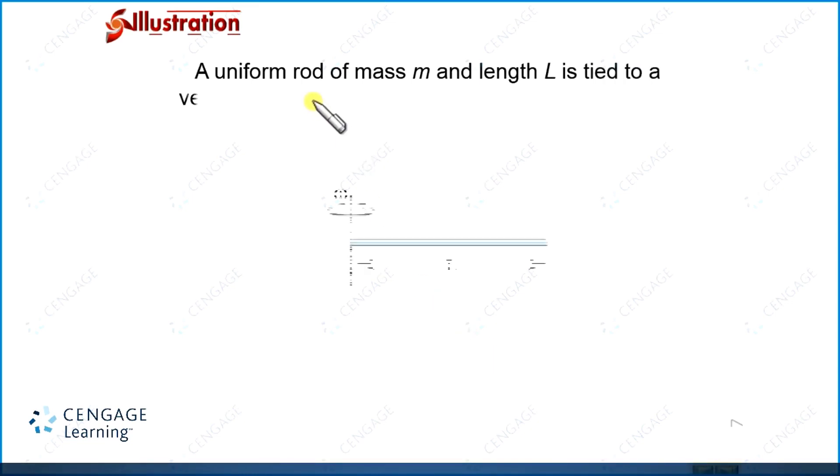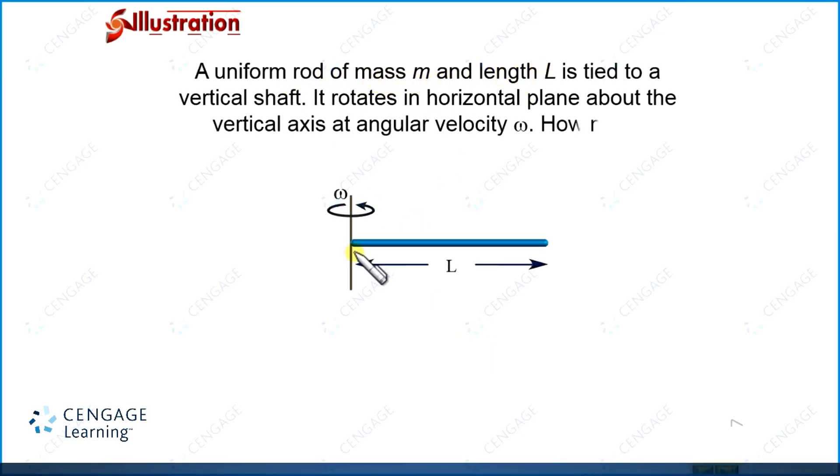In this illustration, we are given a uniform rod of mass m and length L. This is a uniform rod where mass is uniformly distributed over the length. It is tied to a vertical shaft and can rotate in the horizontal plane about this vertical axis with angular velocity omega. How much horizontal force does the shaft exert on the rod?